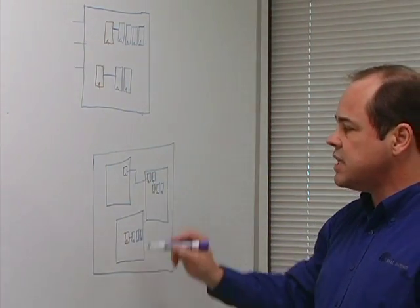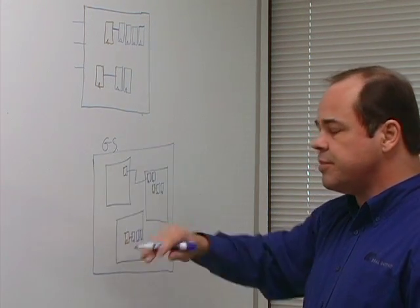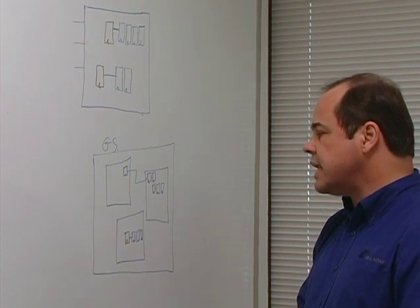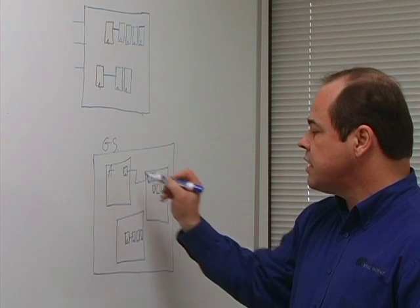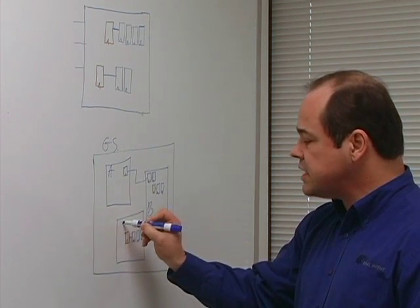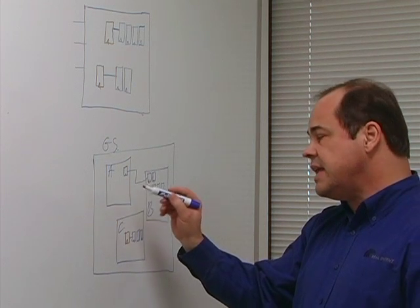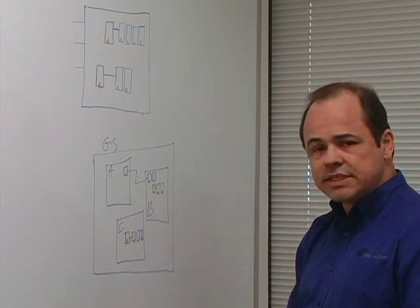But when you get into much larger designs where this could be a gigascale design where there could be over a billion actual NAND 2 gates on the design, then clearly you're going to have various design blocks A, B, C here that are basically each going to have their own synchronizers, but there's going to be a need to also verify the synchronization between the different design blocks.